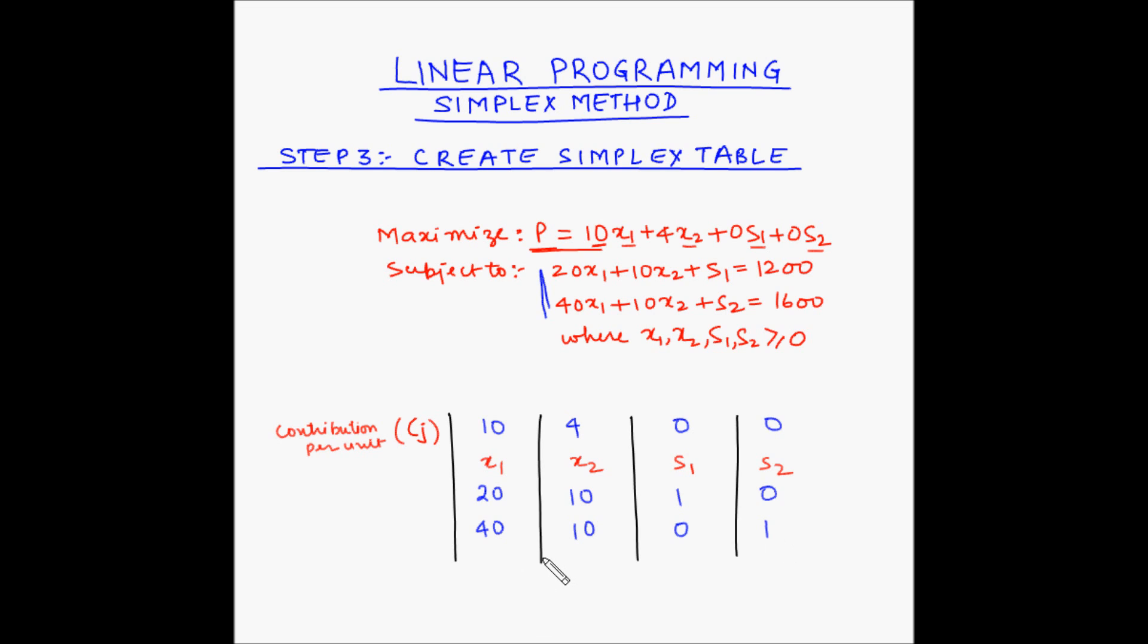Now in this table, the columns of the decision variables x1 and x2, these two columns form the body of the simplex table, while the other columns for the slack variables form the identity.